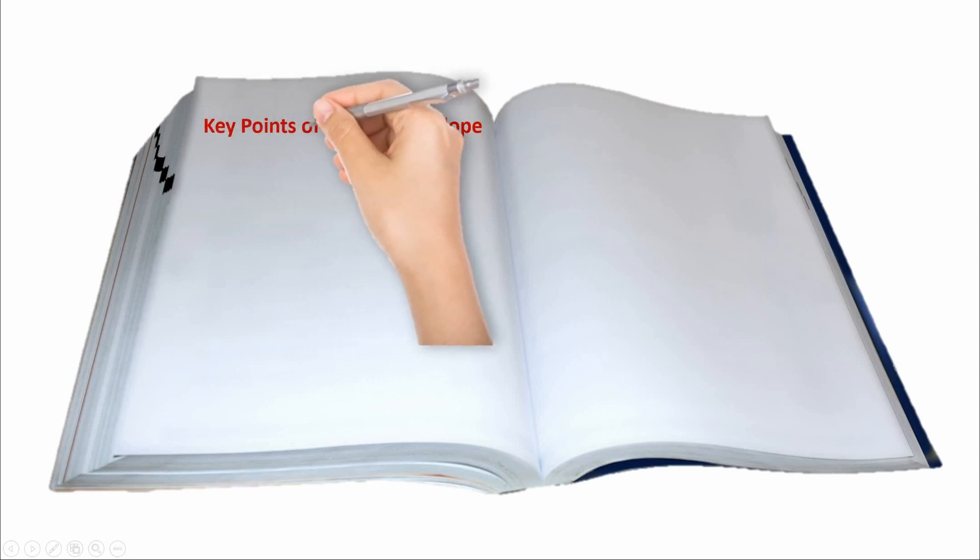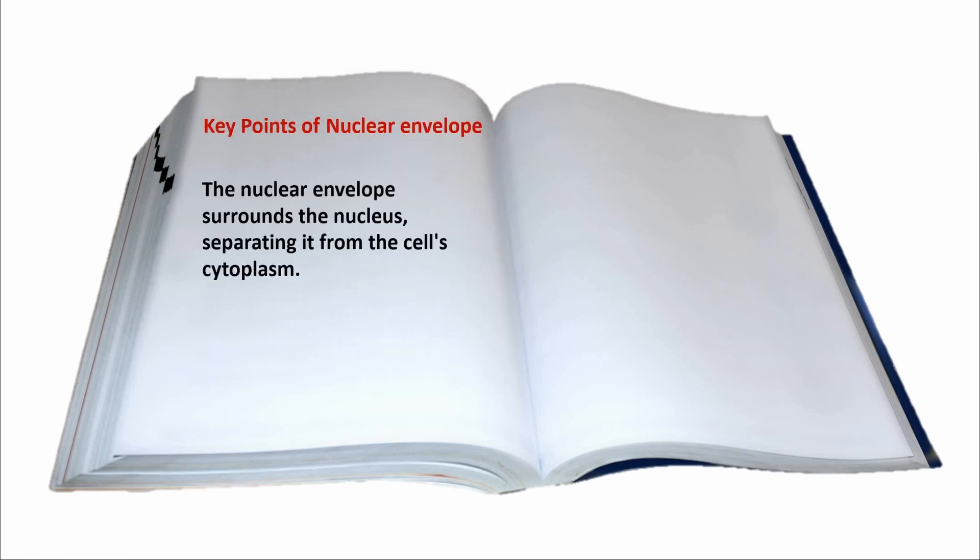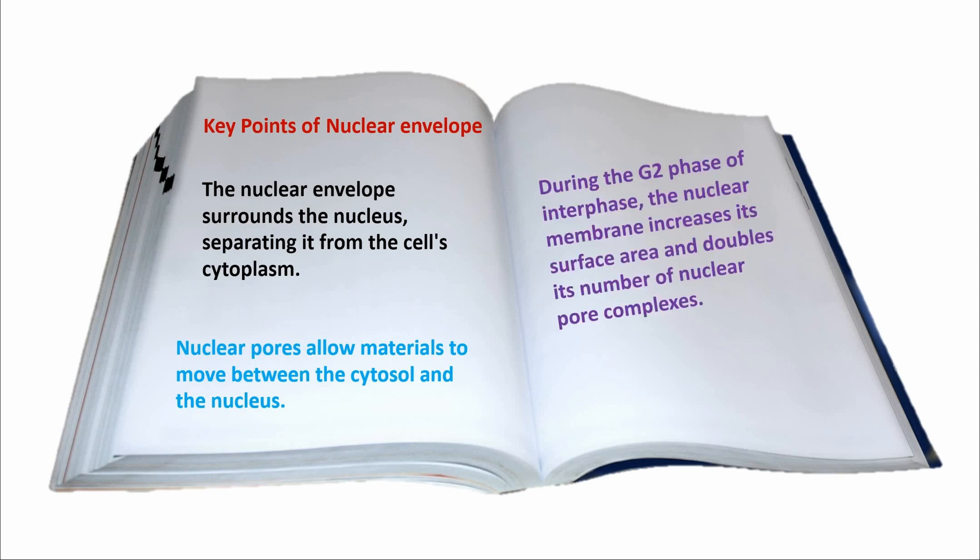Key points of nuclear envelope. The nuclear envelope surrounds the nucleus, separating it from the cell cytoplasm. Nuclear pores allow material to move between the cytosol and the nucleus. During the G2 phase of interphase, the nuclear membrane increases its surface area and doubles its number of nuclear pore complexes.